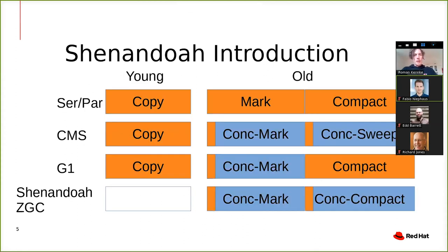Where does it stand in the OpenJDK garbage collector space? It's one of the GCs currently in OpenJDK. At the top you see Serial GC and Parallel GC, which are generational GCs and are basically fully stop-the-world GCs. Whenever they run out of space, they stop all Java threads and then either copy objects from the young space to the older generation, or mark and compact objects in the old generation. This can take quite a long time.